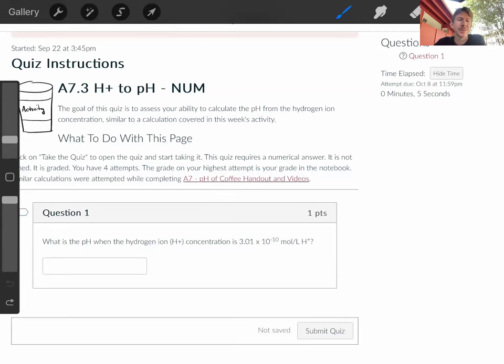This question says, what is the pH when the hydrogen ion concentration is 3.01 times 10 to the minus 10 moles per liter of H plus? And to solve this, we're going to use the pH equals minus log times concentration of H plus, so minus log of 3.01 times 10 to the minus 10.